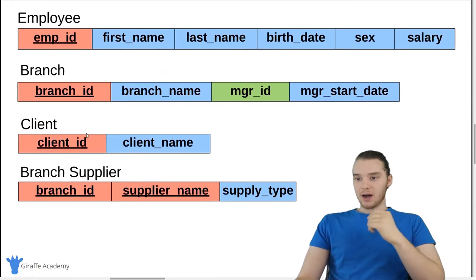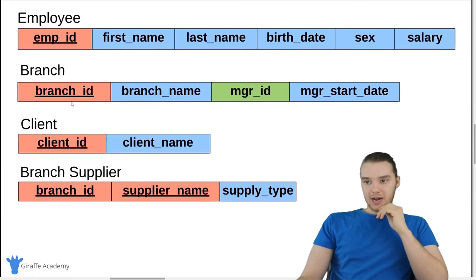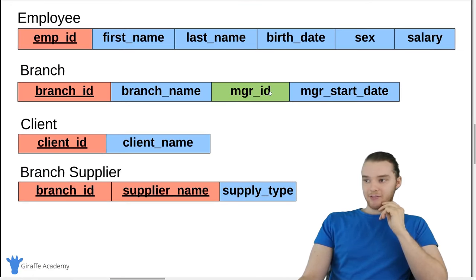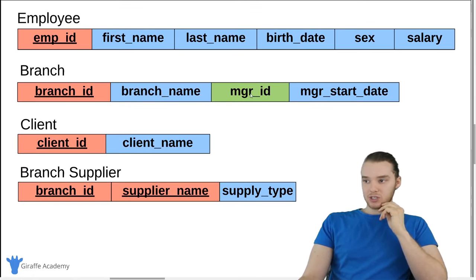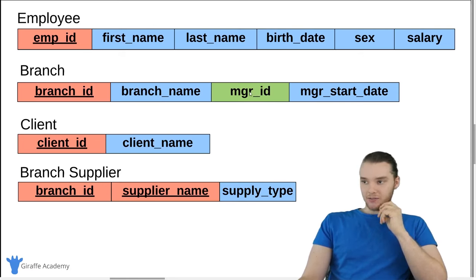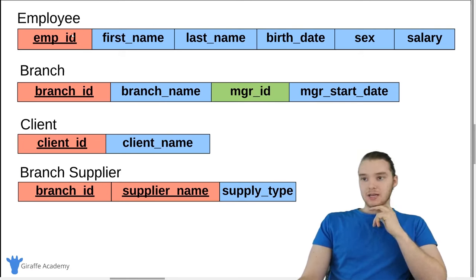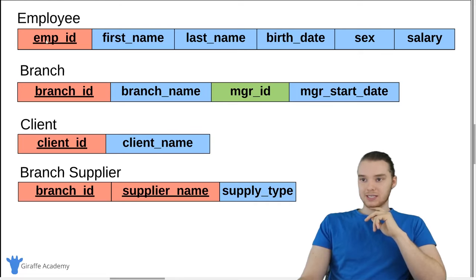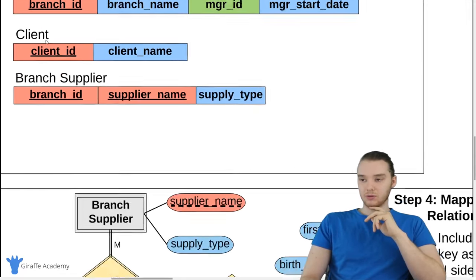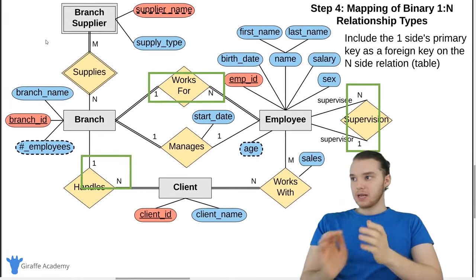So on the branch relation, I added in a foreign key which is manager ID. This is a foreign key which points to the employee's ID. So that's how we're going to link those two together.